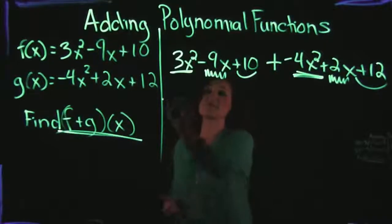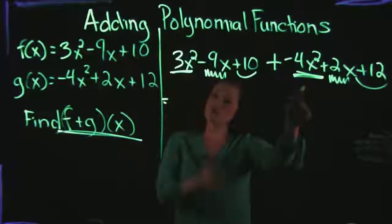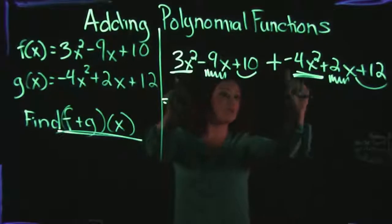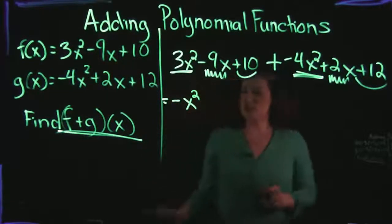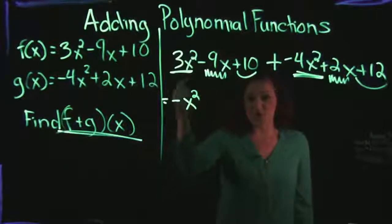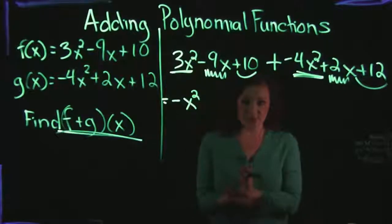So our first set of like terms are our x squared terms. We have 3x squares plus negative 4x squares. So remembering our integer rules, 3 plus negative 4 gives us a negative 1x squared. Just remember that you don't actually have to write the 1 in front. So that's what we get when we combine our first set of like terms together.